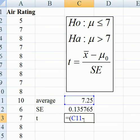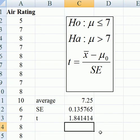minus 7, which is mu-naught, the hypothesized mean, divided by the standard error. So our t-value is 1.84.